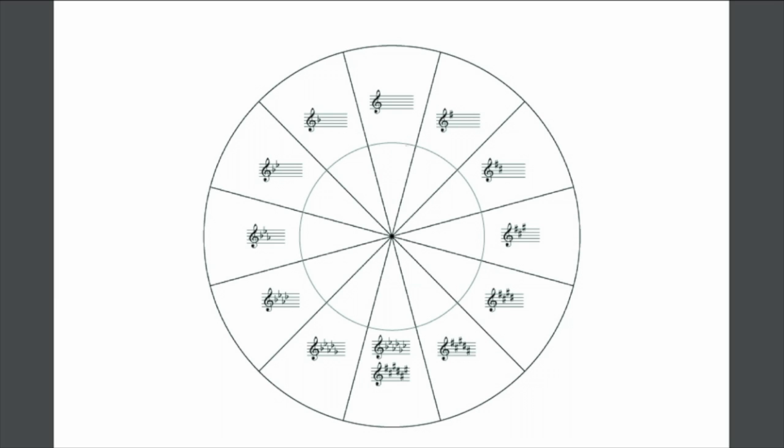We're going to begin our study on the circle of fifths. Think of it as a clock. Instead of 12 on top, we have a zero. It is zero because there's no sharps or flats, and that is C major.